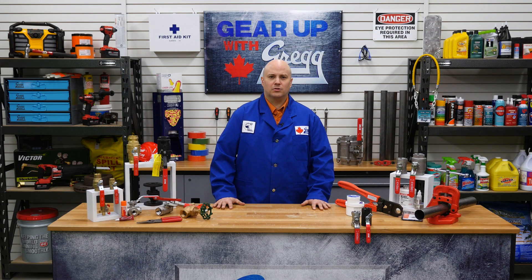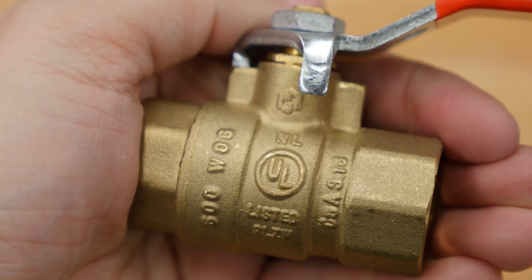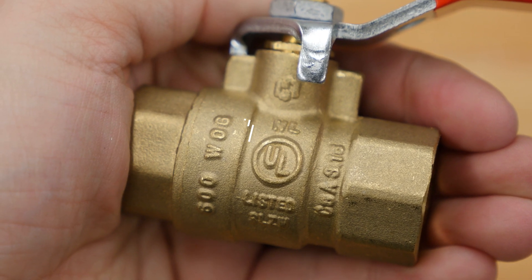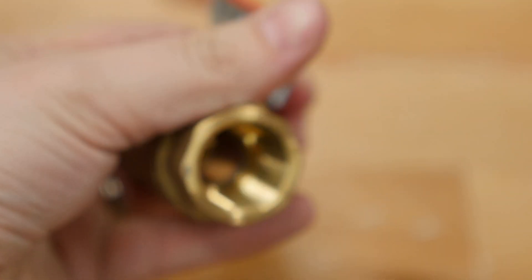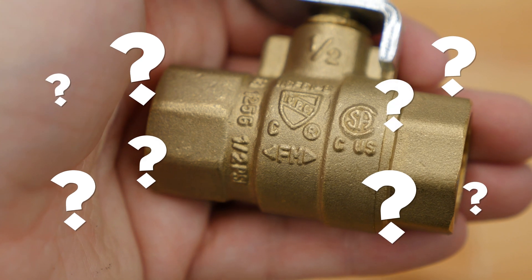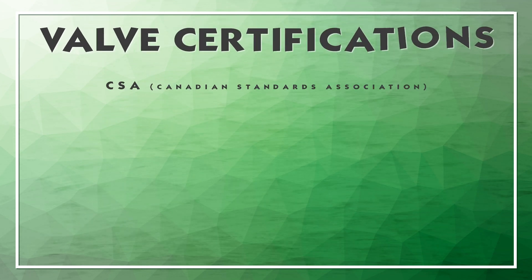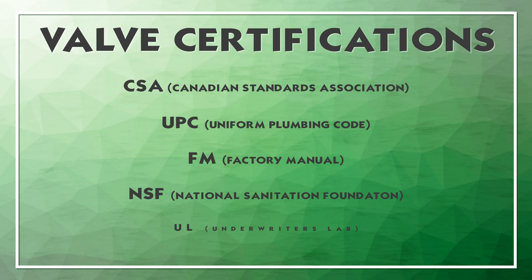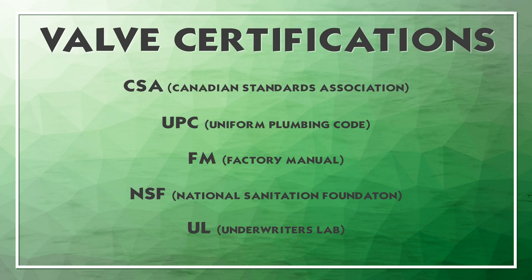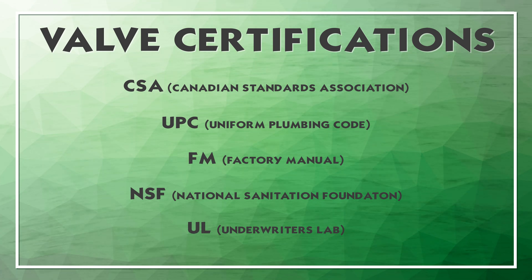Let's take a closer look at this threaded ball valve. As you can see, the valve has the WOG and NL features. But what are all these other specifications? Well, these imprints mean the valve has been approved by different certifications. Each certification is different and has its own implications.